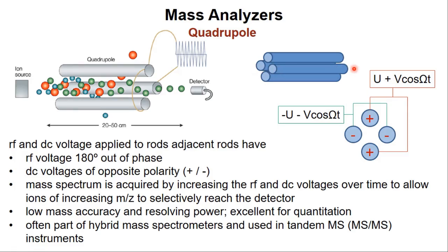This electrodynamic field allows ions with a very small range of mass-to-charge ratios to be passed through the quadrupole mass filter. A mass spectrum is acquired by increasing the RF and DC voltages at a constant ratio, so that progressively larger mass-to-charge ratio ions can make it through to the detector. Relative to other types of mass analyzers, quadrupoles have low mass accuracy and resolving power, but they are excellent for quantitation. They are often part of hybrid mass spectrometers or triple quadrupole mass spectrometers, and they can be used quite effectively to do tandem mass spectrometry.